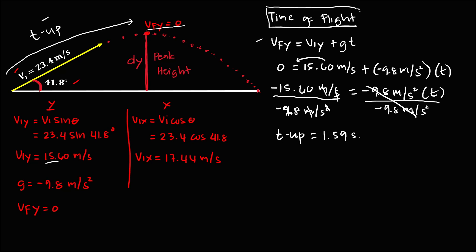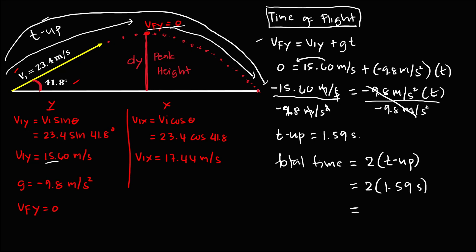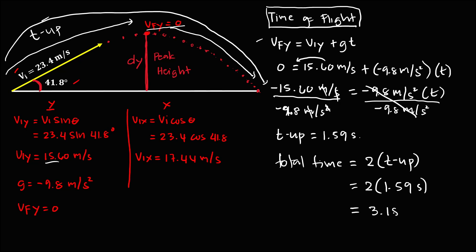Now to find the total time of flight. Since time up equals time down, the total time equals 2 times the time up. So total time equals 2 times 1.59 seconds, which equals 3.18 seconds. The total flight time is 3.18 seconds.